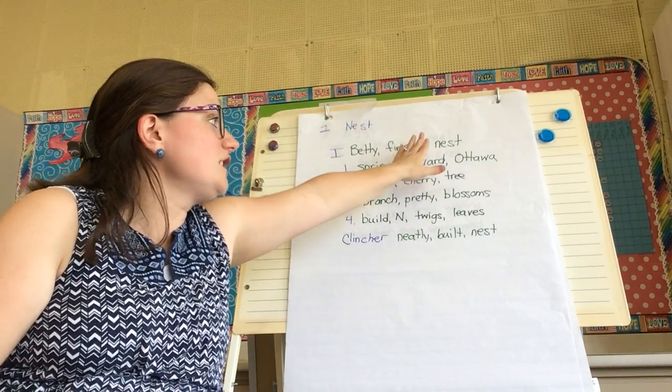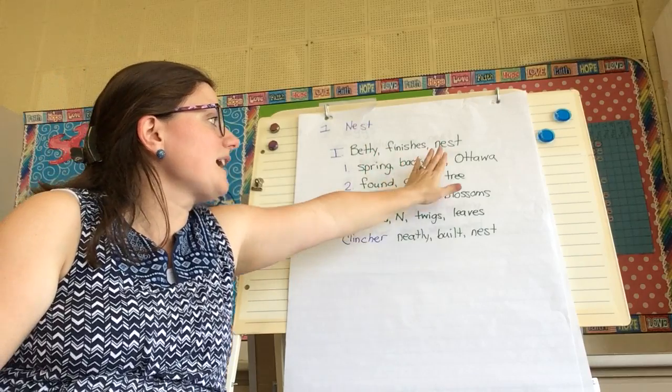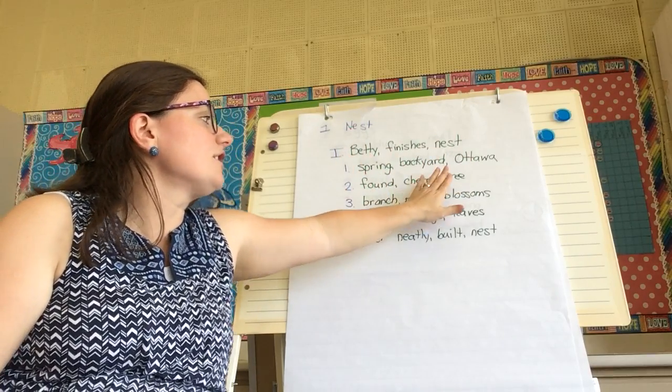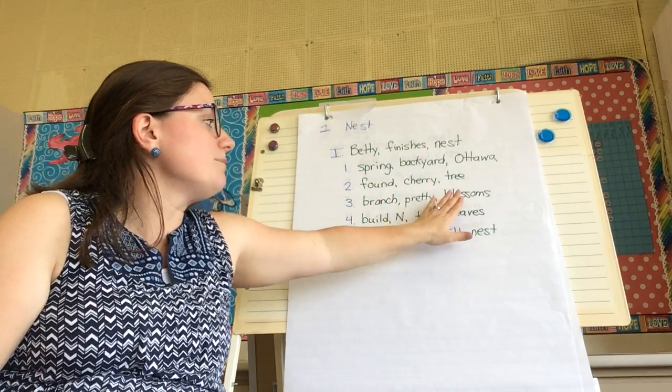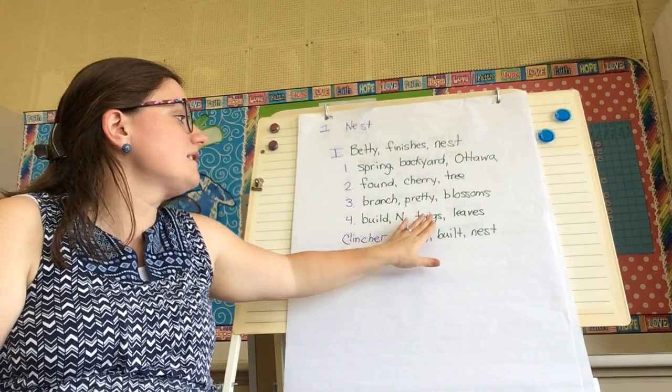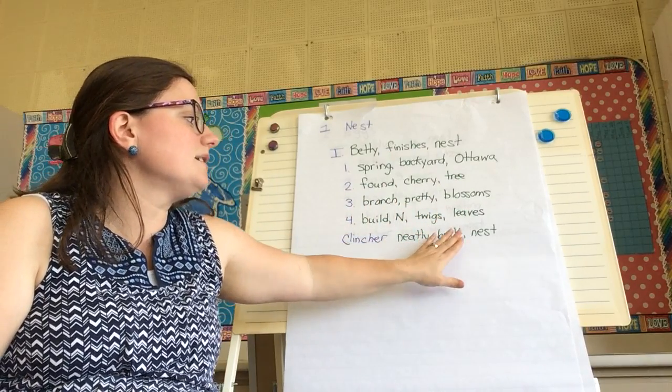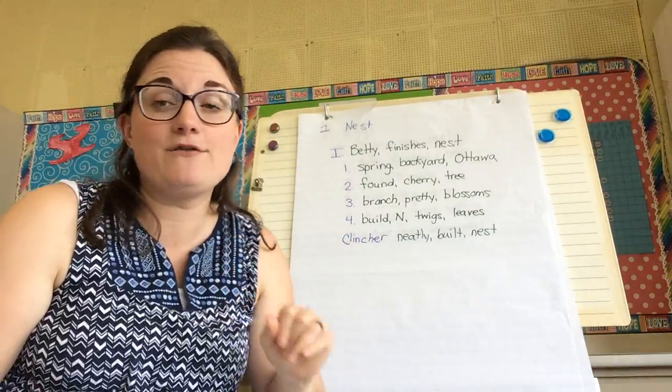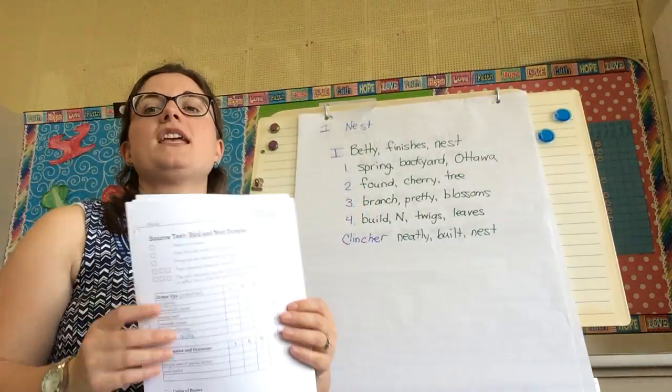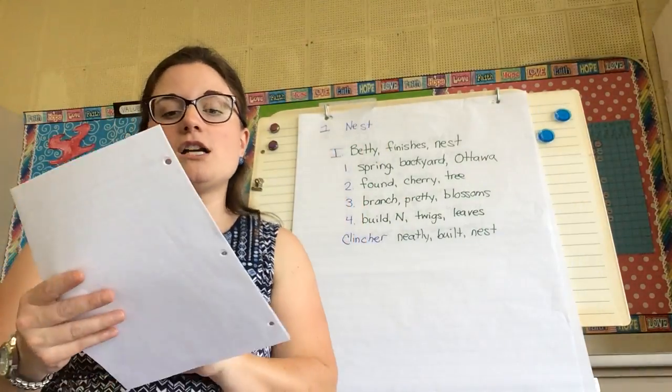So we have Betty finishes nest, spring backyard Ottawa, found cherry tree, branch pretty blossoms, built nest twigs leaves, neatly built nest. Yours may be different and that is fine if you made your own. So we're going to go through our dress ups.